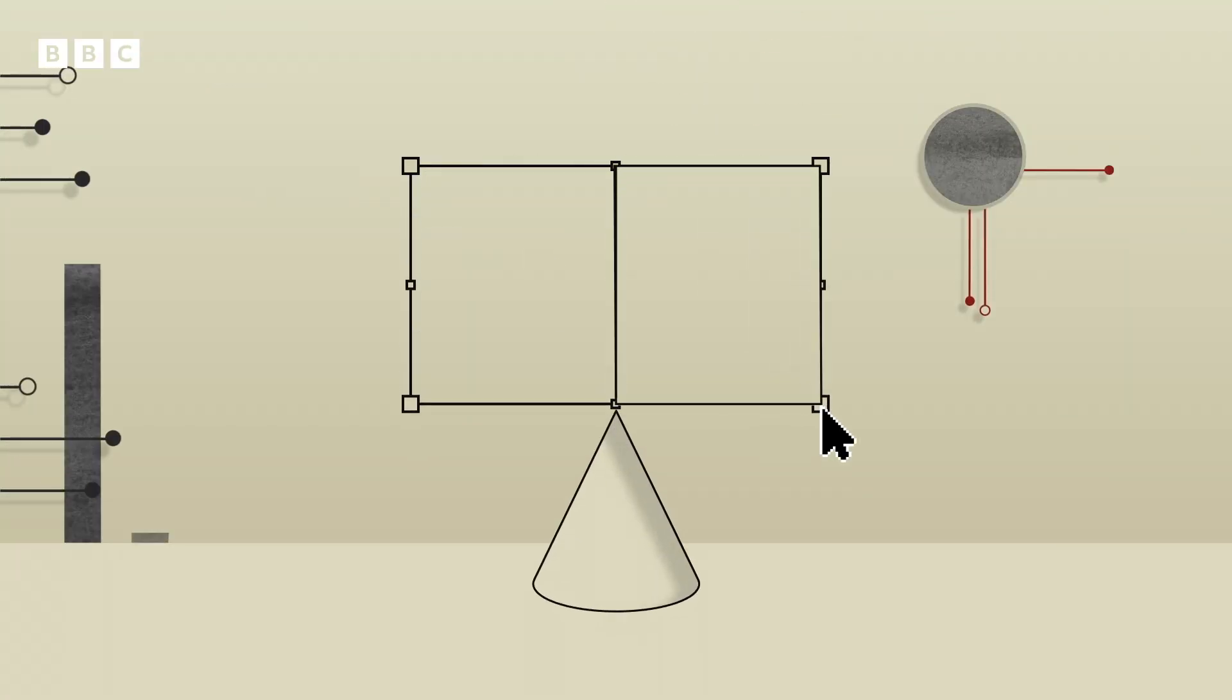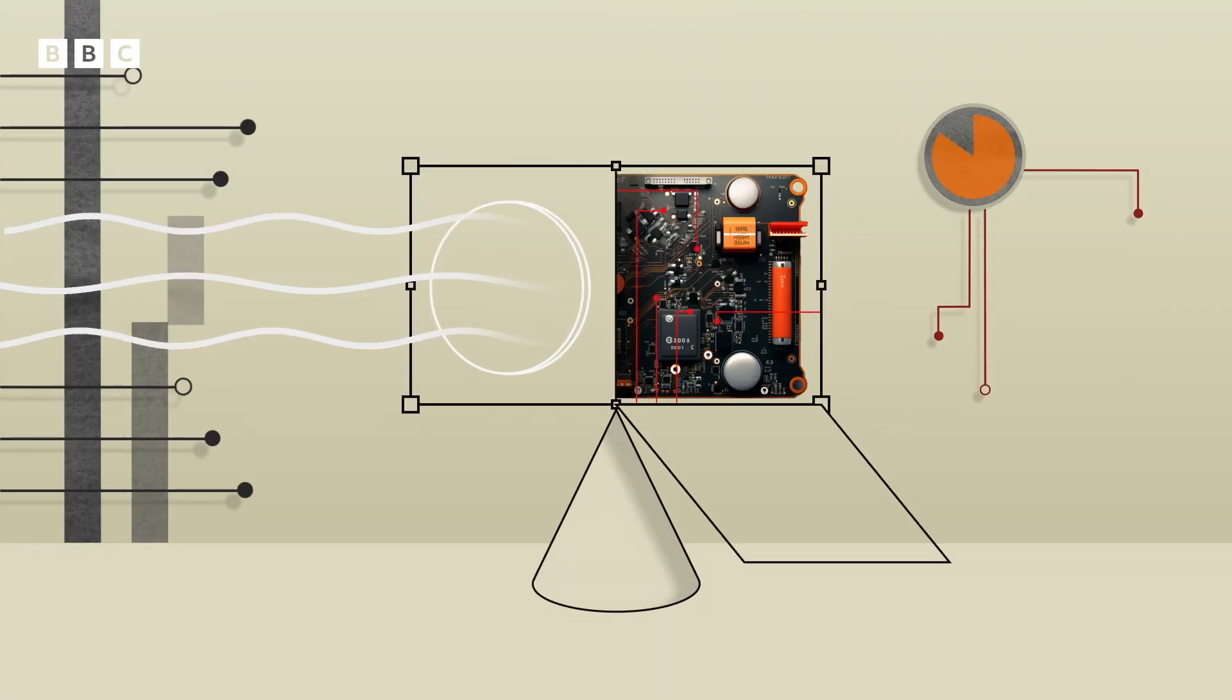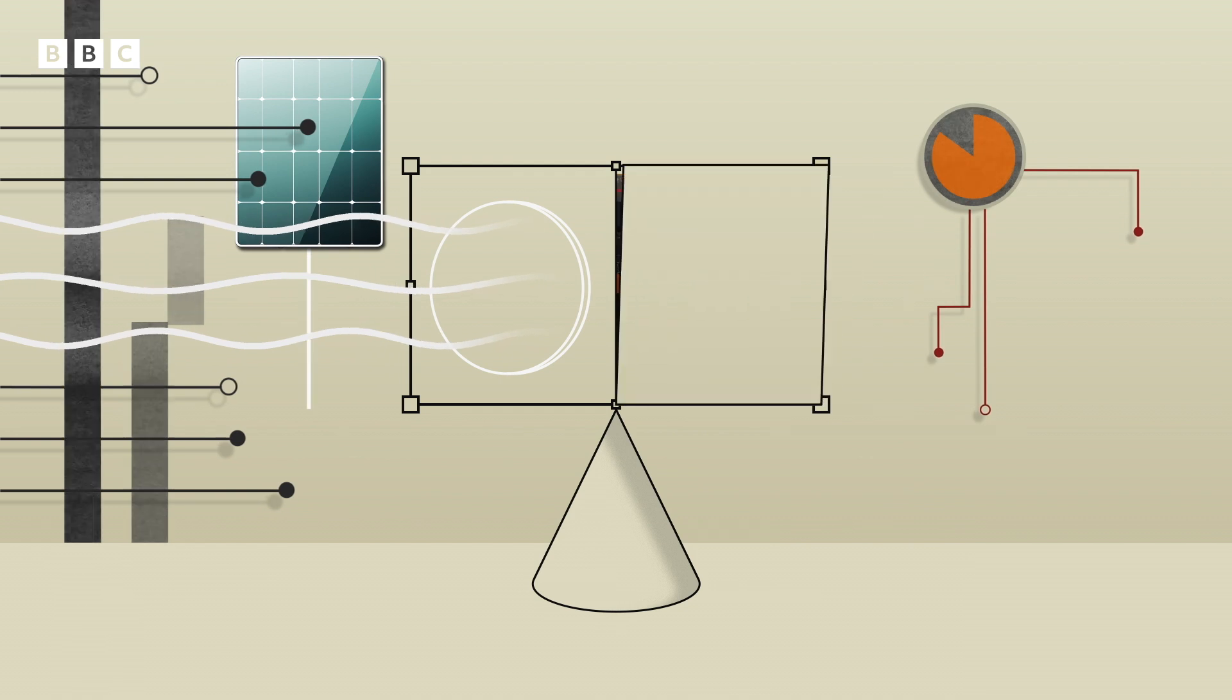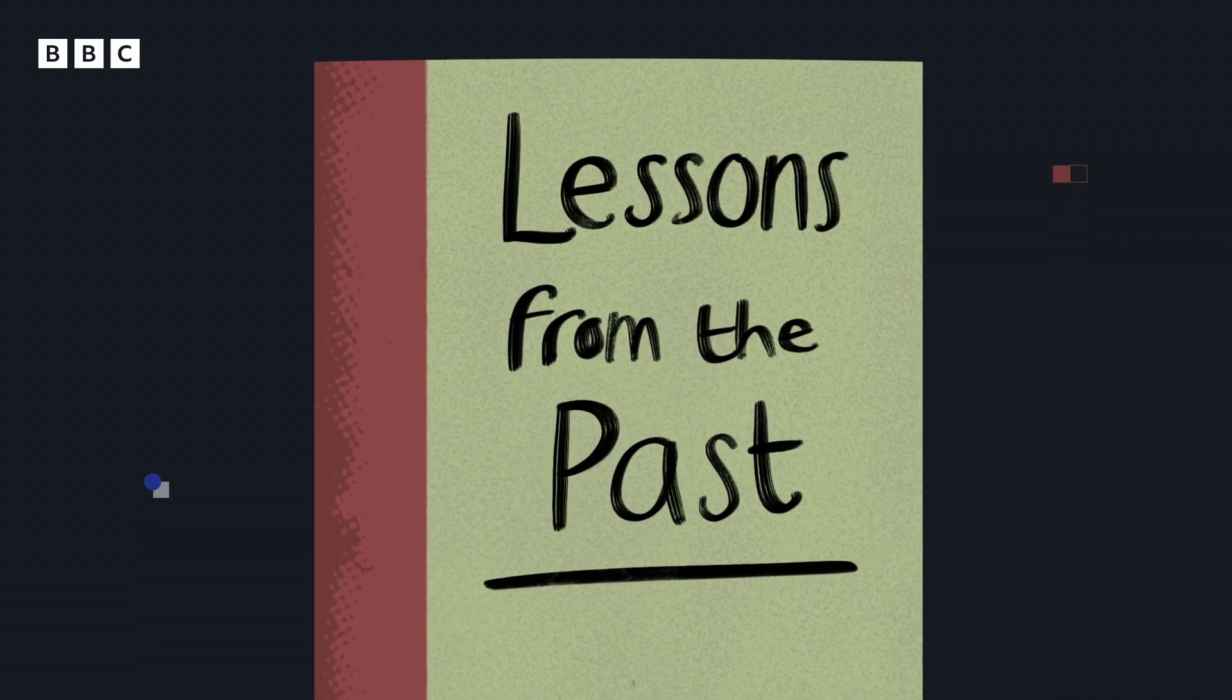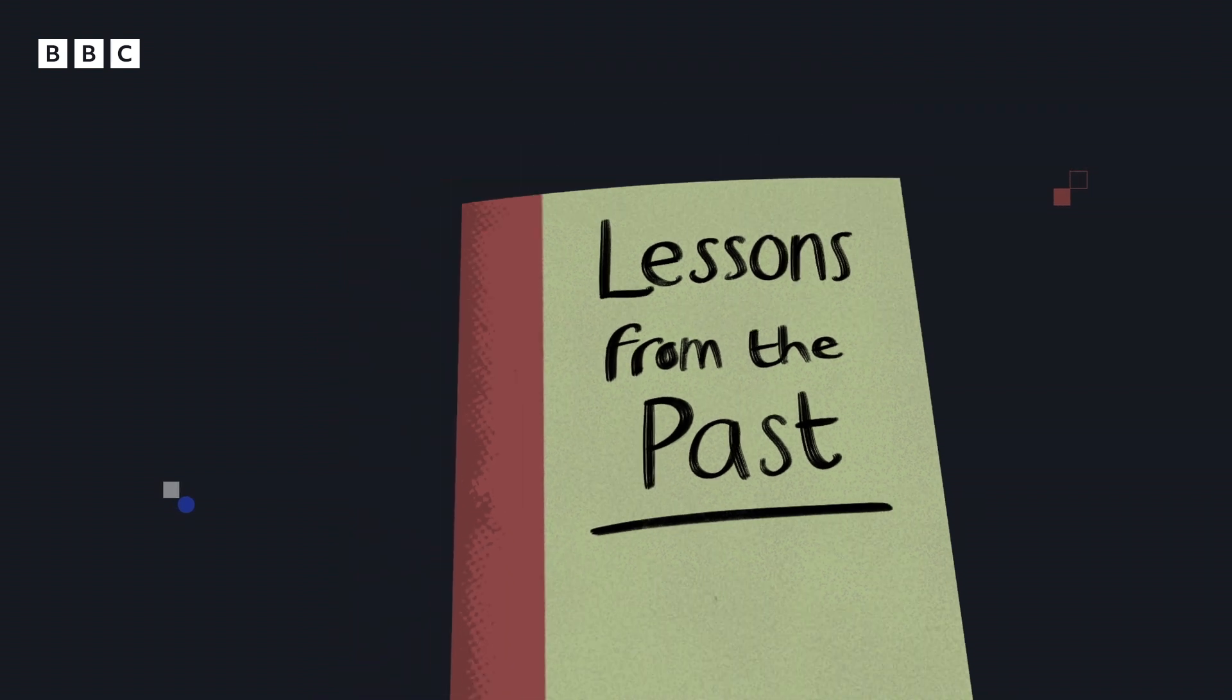One way to address the problem is to simply build a better air conditioner. There are UN-backed initiatives to improve the efficiency of AC so it uses less power and produces fewer pollutants. But rather than betting on new or better tech, it's also possible to change our approach to cooling and comfort.